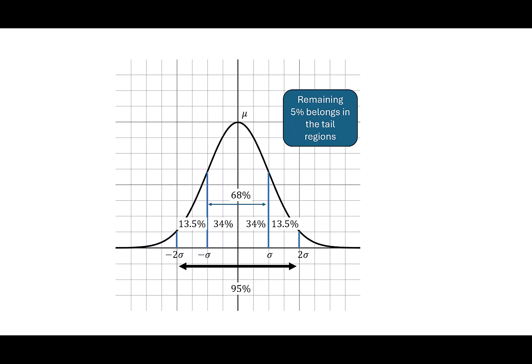Remember, we're dividing by two. Five percent divided by two gives me 2.5 percent on the right and 2.5 percent on the left.